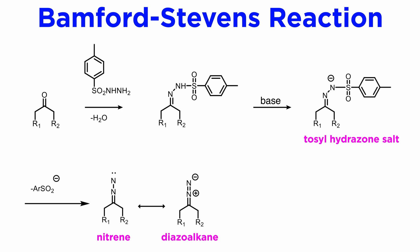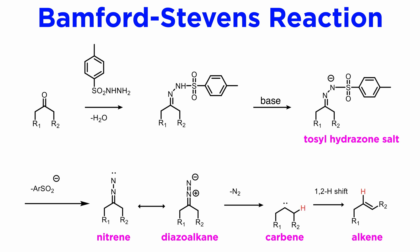This intermediate is a diazoalkane, and we have encountered these substances already. As we have seen in a previous tutorial, diazoalkanes are very unstable because upon heating they lose the very stable nitrogen molecule, leaving behind a carbene. Carbenes are also unstable and smoothly undergo 1,2-hydride shifts to form alkenes. There are four hydrogens next to the carbene carbon, so depending on the geometry of the transition state, one can get some selectivity, with E-alkenes being preferred.